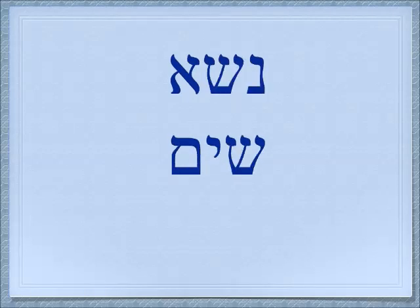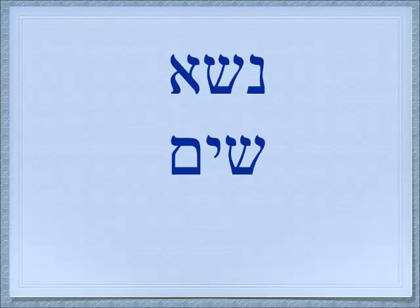The next verb comes from the three-letter root nasa, meaning 'to lift up' or 'to carry' — he's going to lift up his face. The last verb, yasem, comes from the verb sim, which means 'to put' or 'place.' It's more than just giving you peace — he's going to place his peace upon you.